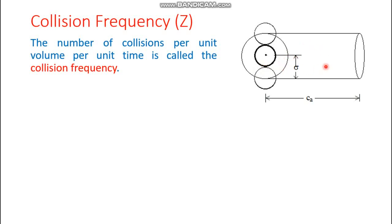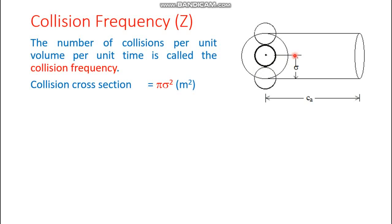The cylinder is swept away by the molecule in one second. The cross-sectional area of this cylinder — the area of the circular face — is known as the collision cross-section, with value π r². Here r is replaced by sigma, so it becomes π sigma², and the SI unit is meter squared.